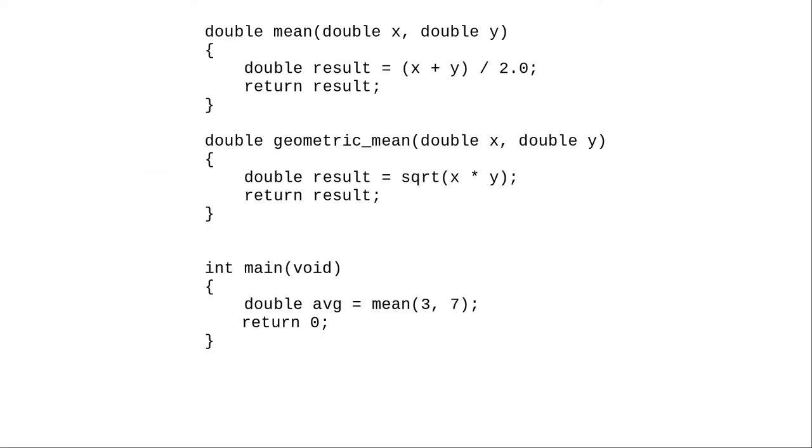Having local scope for variables and function parameters becomes very advantageous. The parameters x, y, and variable result defined in function mean are in that function's scope. They're local to that function, and nobody else can access them.